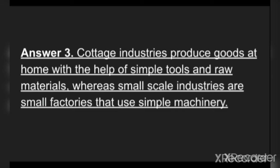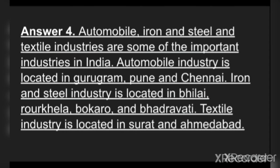Whereas small scale industries are small factories that use simple machinery. Answer four: automobile, iron and steel, and textile industries are some of the important industries in India. Automobile industry is located in Gurugram, Pune, and Chennai.